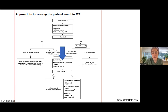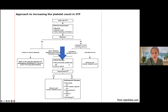This highlights the main mechanisms of medications available right now: rituximab, TPO mimetics, splenectomy, and others, with ongoing therapies as well. The threshold for treatment is platelets less than 20.